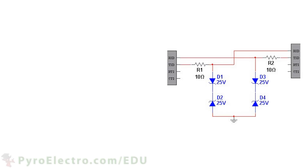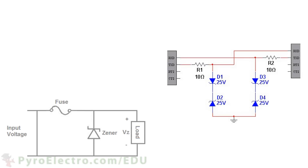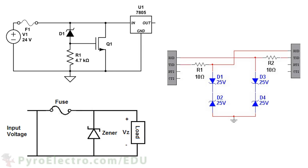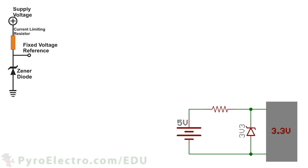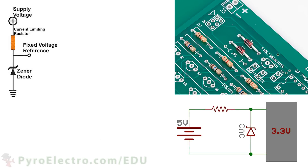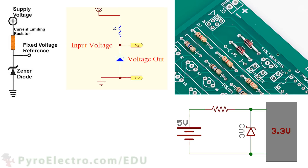Zener diodes are often used as a means of protecting electrical inputs from unwanted voltage levels. Zener diodes can also be found as voltage regulators for low current applications or for providing a stable reference voltage. Consistent and stable reference voltages that Zener diodes can offer are very important for many applications, for example with analog to digital converters.